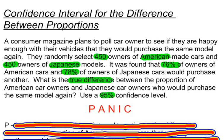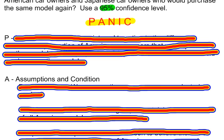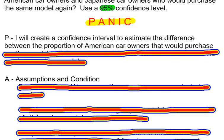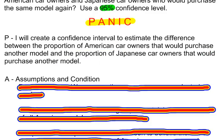I'm going to use the PANIC method to go through this confidence interval. P stands for parameter statement. I really just want to tell the reader what I am about to do — all of this work means something, and I'm going to tell them at the very beginning what all the work is leading to. I will create a confidence interval to estimate the difference between the proportion of American car owners that would purchase another model and the proportion of Japanese car owners that would purchase another model.